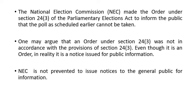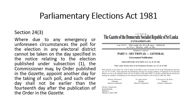The National Election Commission is not prevented from issuing any notice to the general public for information — that we must consider. The Commission then discussed everything, finalized, and informed the public by an order. It was a real order made under Section 24(3) of the Parliamentary Elections Act.